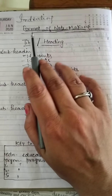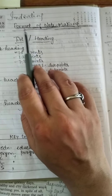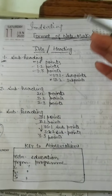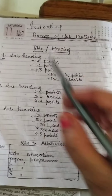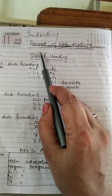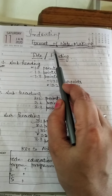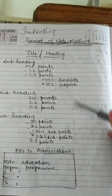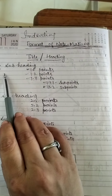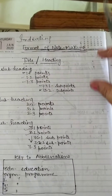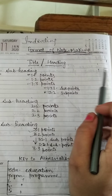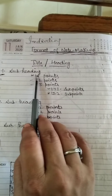Here is the format of note making. First, read the passage containing four to five paragraphs. After reading, make a suitable title for the passage. Then read each paragraph — first, second, third — and after reading those paragraphs, make subheadings.